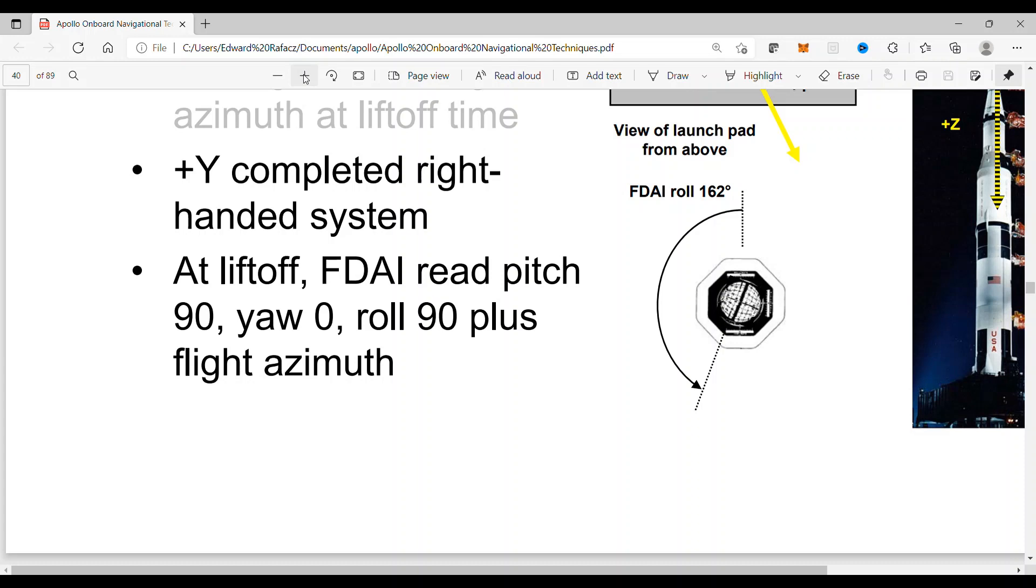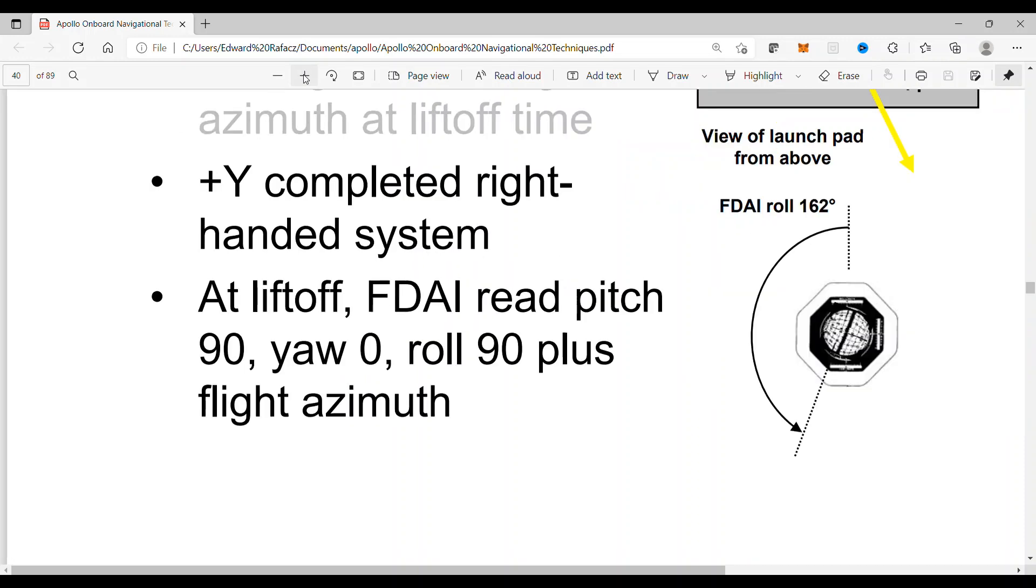The FDAI would show completely white. The orientation would be pitch 90 degrees, yaw 0 degrees, roll 90 plus azimuth, which is 72 degrees, which comes to a total of 162 degrees at liftoff. Great question.